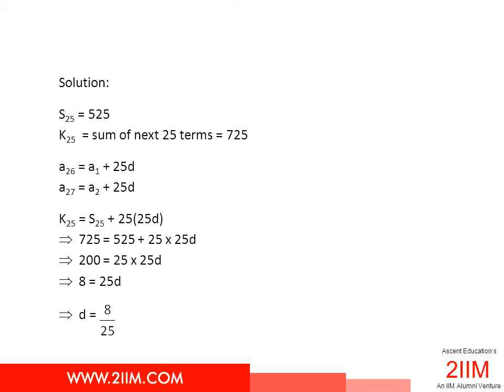There is a formula-based method to solve it. We know sum to 25 terms and we can find sum to 50 terms. We use the formula n by 2 into 2a plus n minus 1 into d. We should be able to get the starting term and common difference.